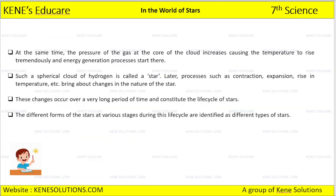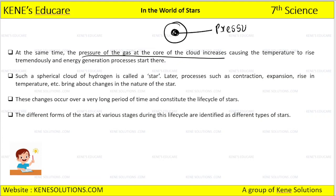At the same time, the pressure of the gas at the core of the cloud increases — the pressure at the center increases. So if there is an increase in the pressure, there is also a rise in the temperature. Its temperature also increases and a tremendous energy generation process starts.